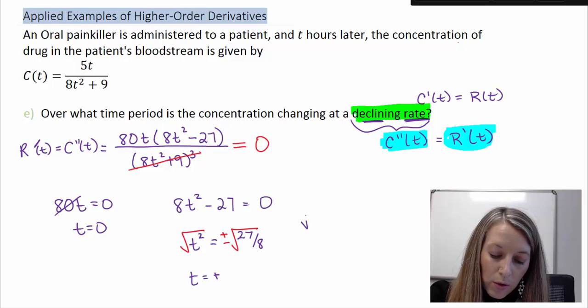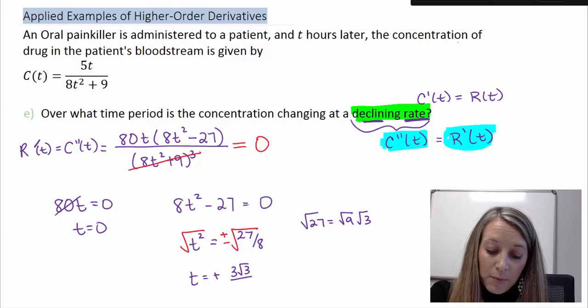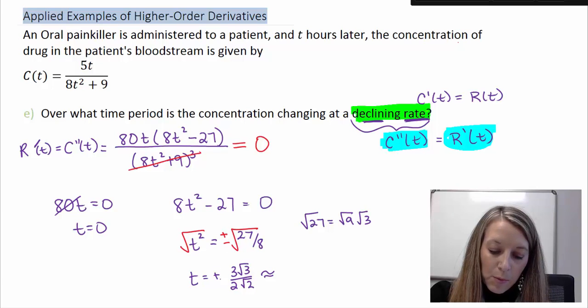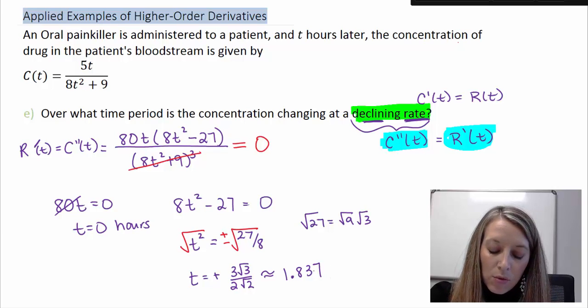Simplifying both of these, square root of 27, I can write as square root of 9 times square root of 3. So that gives me 3 root 3. And in the last example, I simplified square root of 8. That gave me 2 root 2. This is my most simplified exact answer. But in applied problems, we always want to know an answer that makes sense. So if we compute the decimal approximation of this, that gives us 1.837. This is in time, so we're talking about something's happening at 0 hour, and something's happening at 1.837 hours.